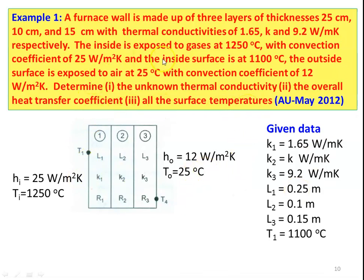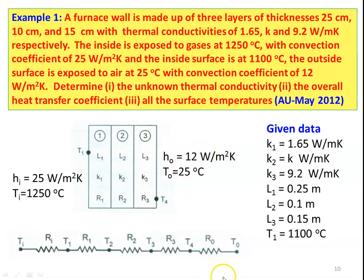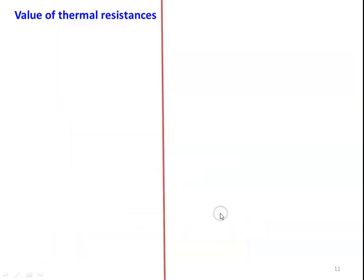The outside surface is exposed to air at 25°C with a convection coefficient of 12 W/m²·K. Determine the unknown thermal conductivity, overall heat transfer coefficient, and all surface temperatures. There are five resistances: inside convection resistance Ri, slab resistances R1, R2, R3, and outside convection resistance Ro. Calculate resistance values: Ri = 1/(A·Hi) = 1/25 = 0.04 °C/W; R1 = L1/(A·K1) = 0.25/1.65 = 0.1515 °C/W; R2 = 0.1/K (unknown); R3 = 0.15/9.2 = 0.0163 °C/W; Ro = 1/(A·Ho) = 1/12 = 0.083 °C/W.